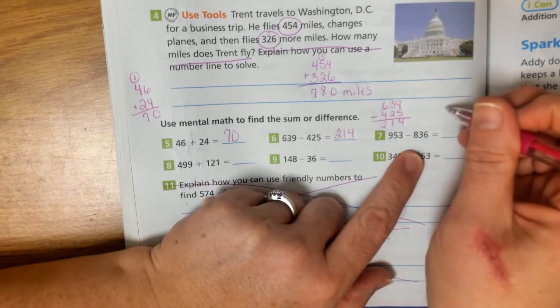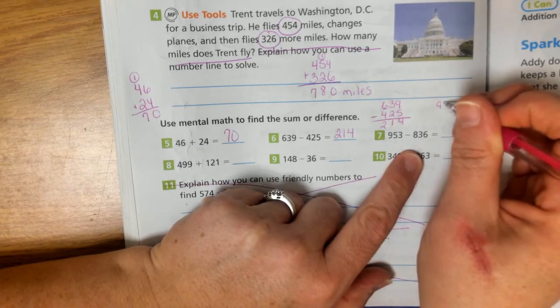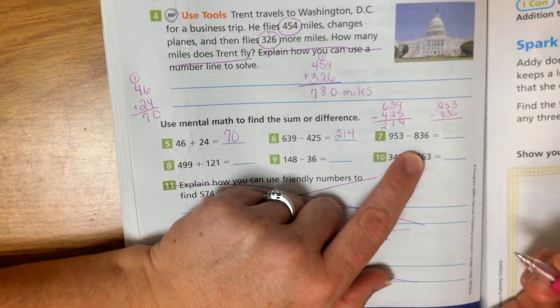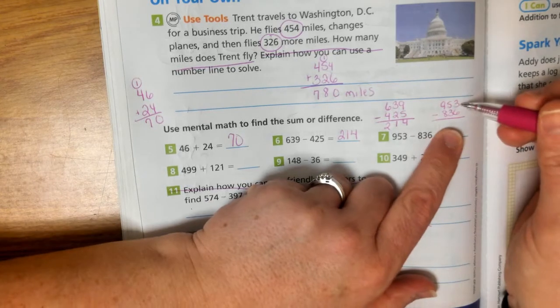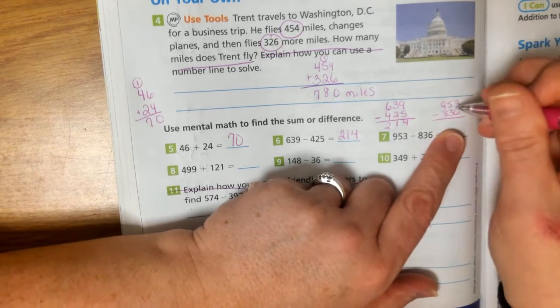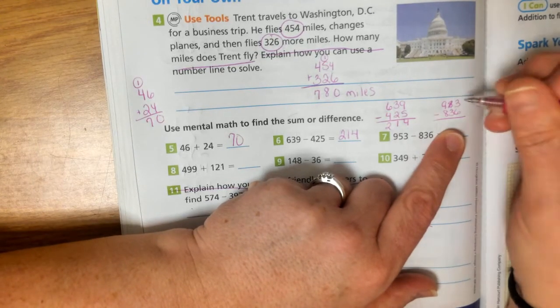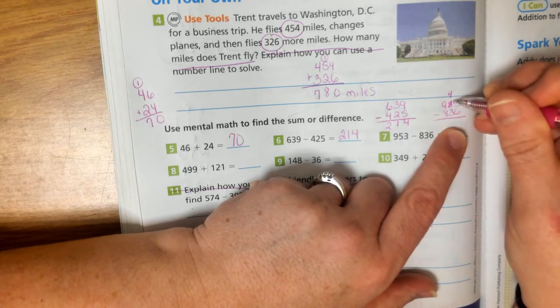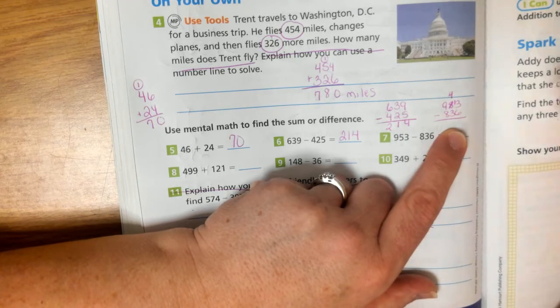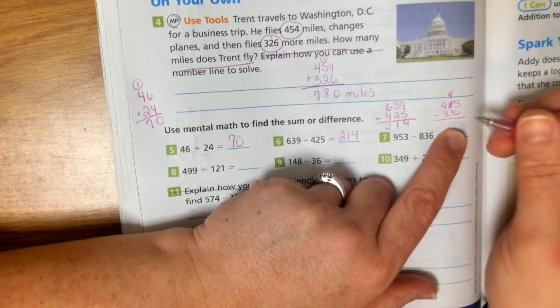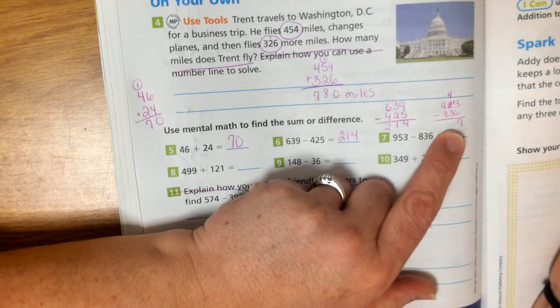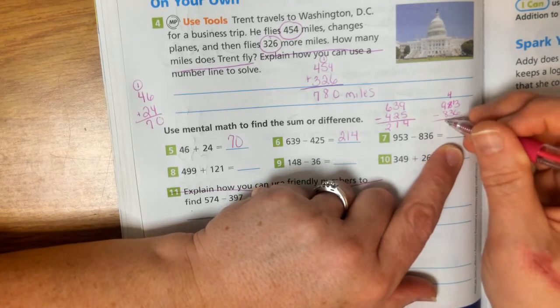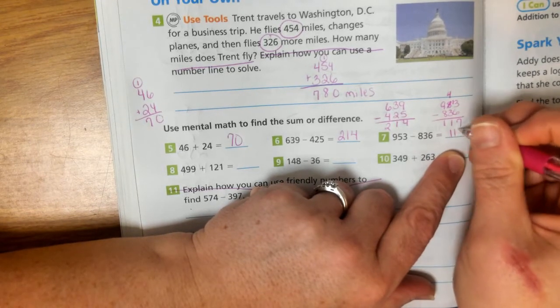Number 7 is also a subtraction problem. 953 minus 836. We can see that our 3 is smaller than our 6. So I need to regroup. So my 5 in the tens place will become a 4. It will become 4 tens. So then my 3 in the ones place will become a 13. 13 minus 6 is a 7. 4 minus 3 is a 1. And 9 minus 8 is a 1. So we have 117.